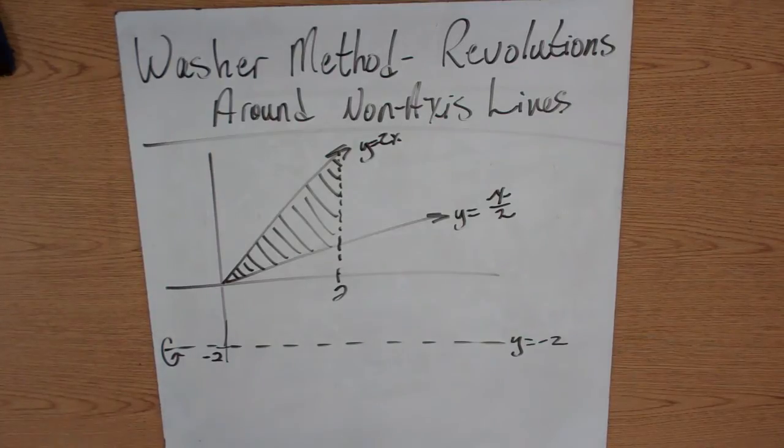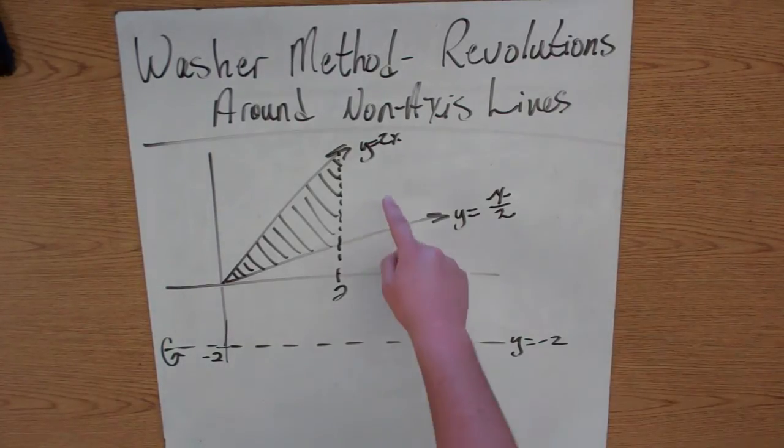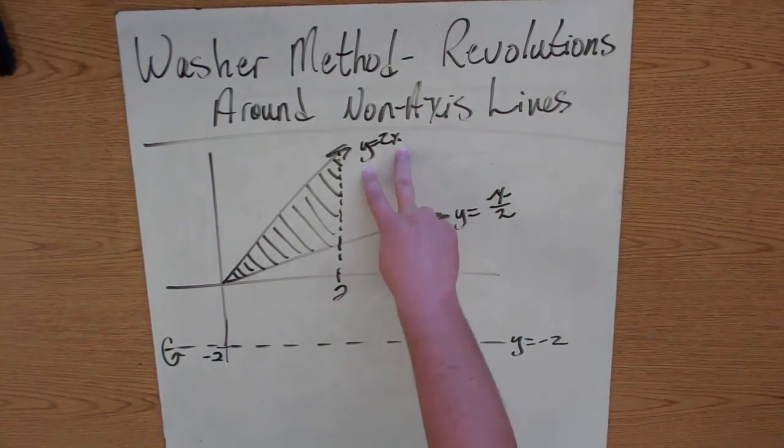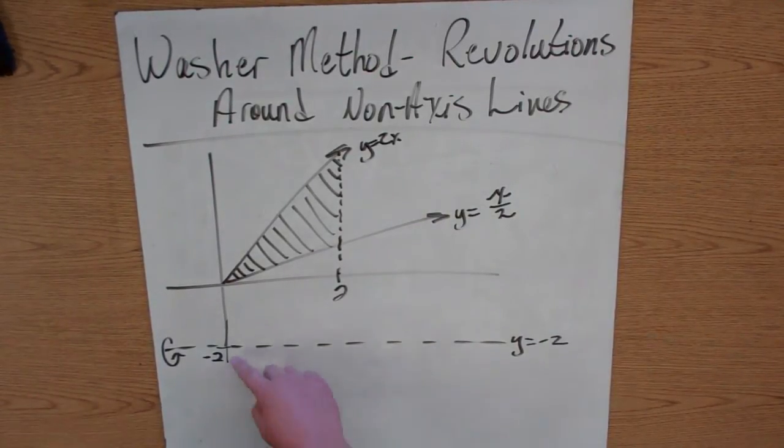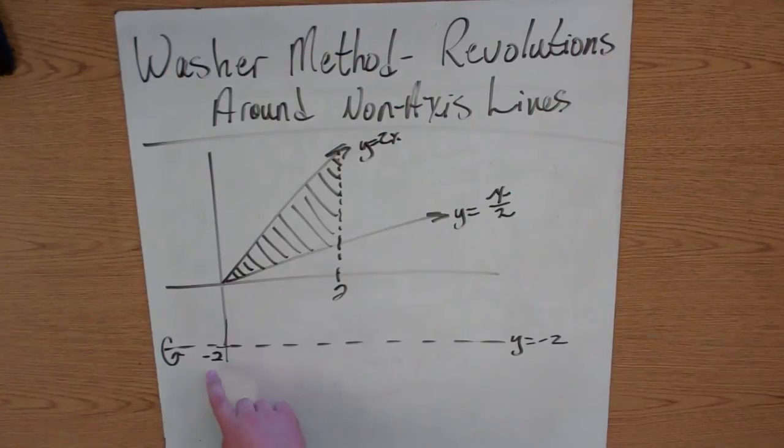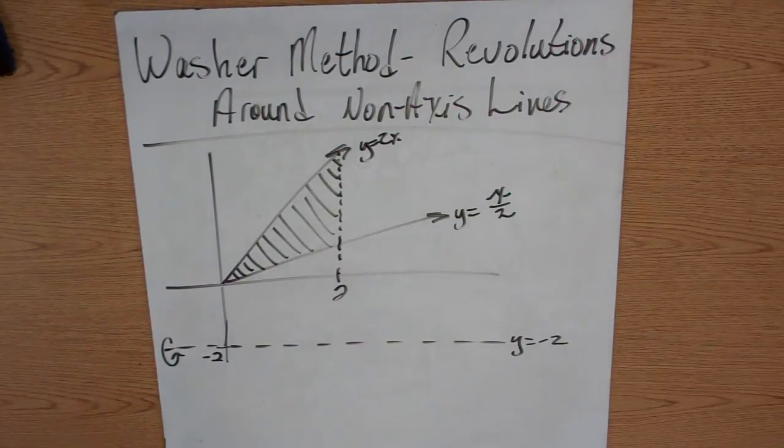In this case, we have the function y equals 2x and y equals x over 2, and we're going to revolve this now around the line y equals negative 2. So now, how do we do this?